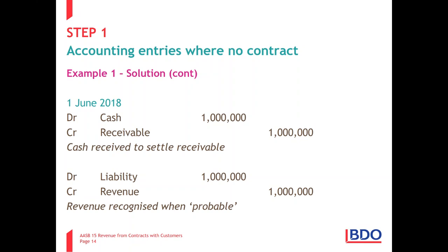This would have been an issue if we had a year-end of 31 March — or if the financial reporting date fell between the date we delivered the goods and the date we received the cash. So that's a simple example to illustrate that point.